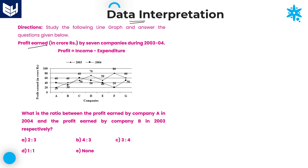Here, profit earned by seven companies during 2003 and 2004 — that is the given information. The seven companies are A, B, C, D, E, F, and G. For these seven companies, the profit earned in the years 2003 and 2004 is given. All the values are provided in terms of crores — so 40 means 40 crores, 20 means 20 crores, and so on.